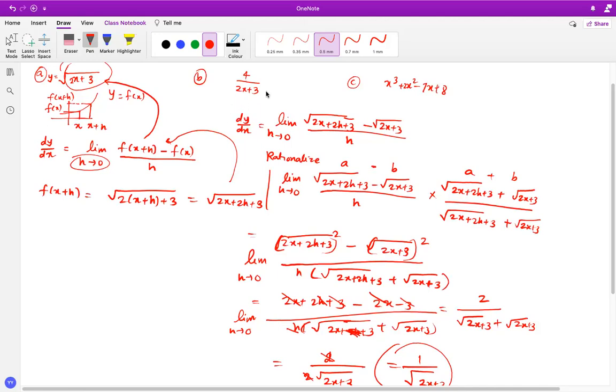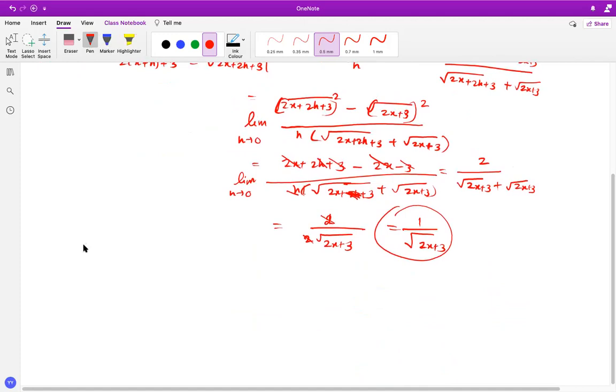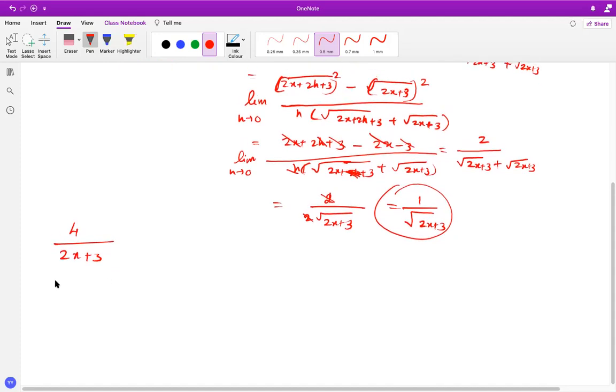And now taking down the second example, I'm going to take the next example, which is 4 over 2x plus 3. So 4 over 2x plus 3 is my example. Now in this question, what we're going to do is we're going to take f of x plus h first minus f of x straight away so that we can simplify it. So 4 over 2 times x plus h plus 3 minus 4 over 2x plus 3.